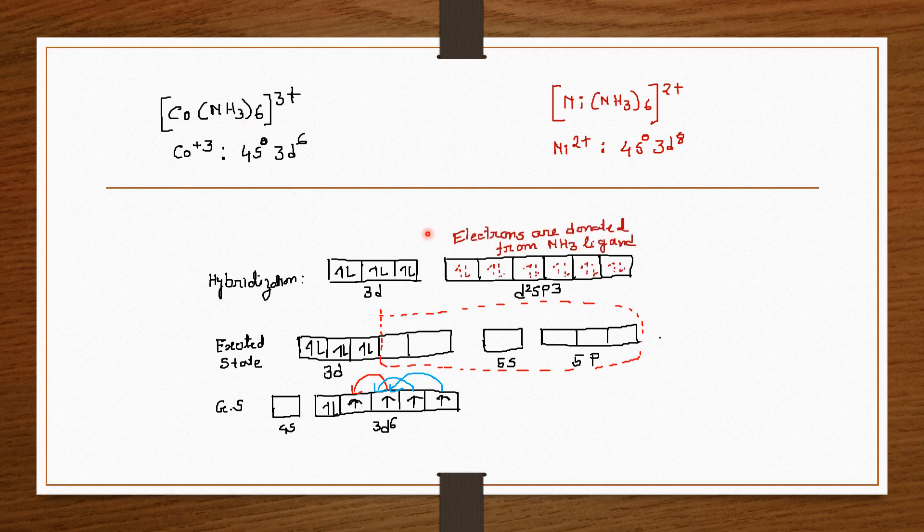Ammonia is a ligand. Each ammonia can donate 2 electrons. So 6 ammonia ligands can donate 12 electrons. Now 12 electrons are donated to d2sp3 orbital of cobalt +3 and it forms this coordination compound. This type of coordination or bond pattern or hybridization is called inner orbital complex.